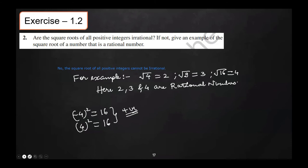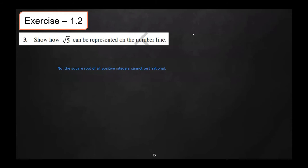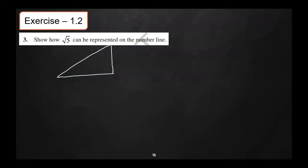In the third question, show that √5 can be represented on the number line. We have to represent √5 on the number line. For that, first draw a rough figure — we'll make a right angle triangle ABC. The base of this right angle triangle should be 2, and the height should be 1, so that we get the hypotenuse as √5.